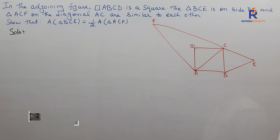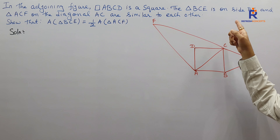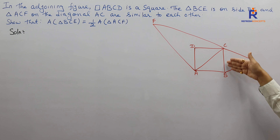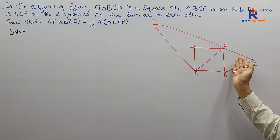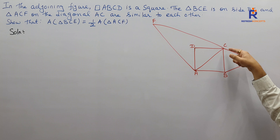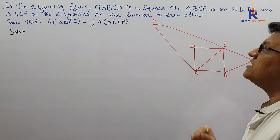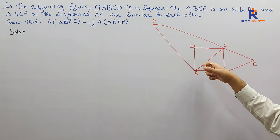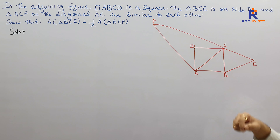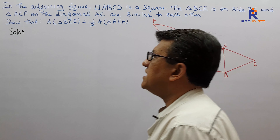The next question says: in the figure, quadrilateral ABCD is a square. Triangle BCE is on one side BC, which is a side of the square. Triangle ACF is on diagonal AC, which is also a side of that triangle. These two triangles — triangle BCE and triangle ACF — are similar to each other.